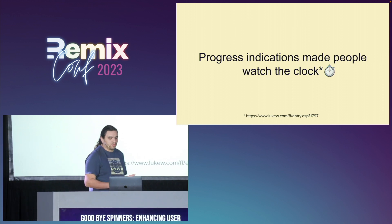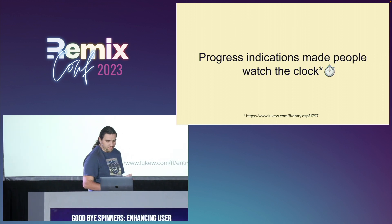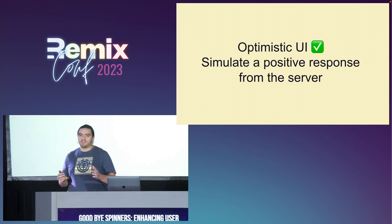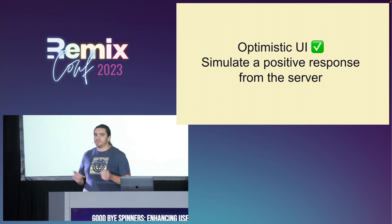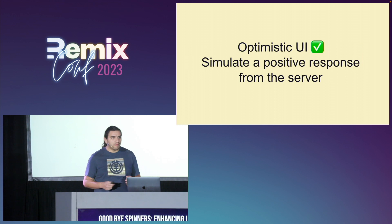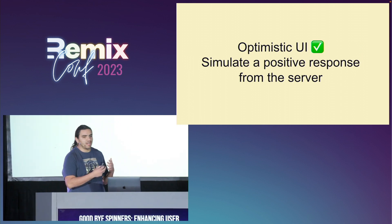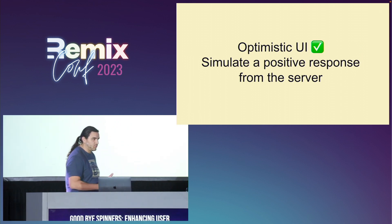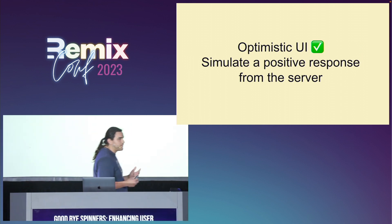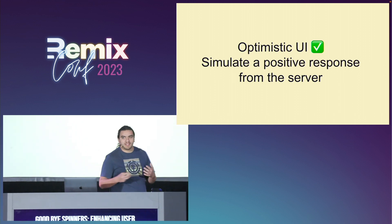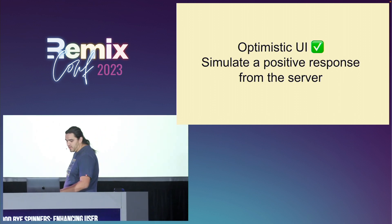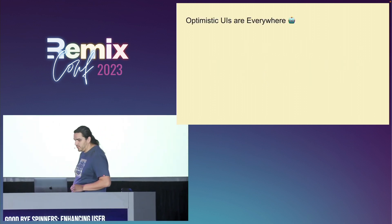So what can we use to solve this? We could use Optimistic UI. It simply means to simulate a positive response from the server. So even if we don't have a response yet, we can just assume that it will work, and most of the time we have enough data in memory to display the end result. So let's see a few examples.